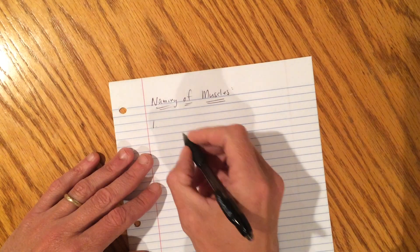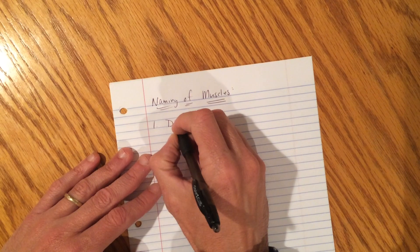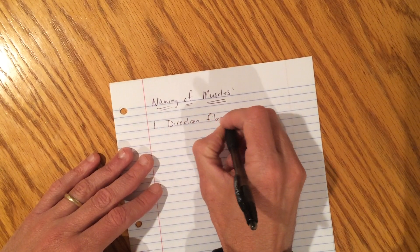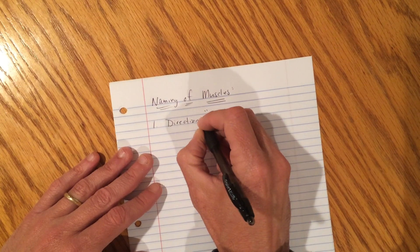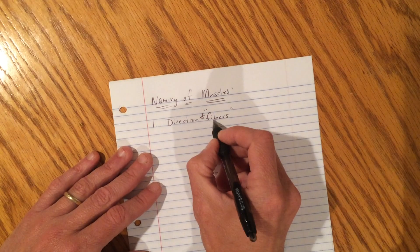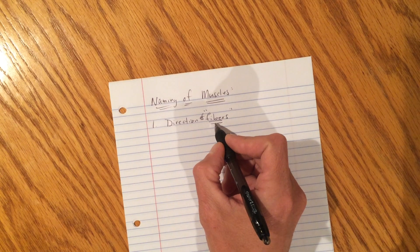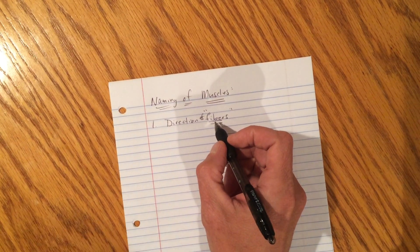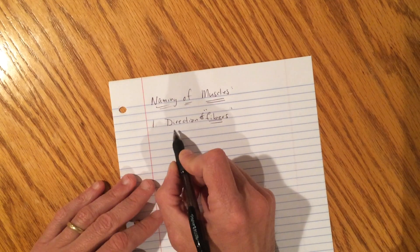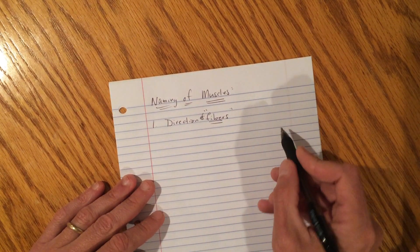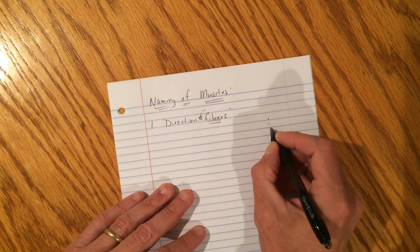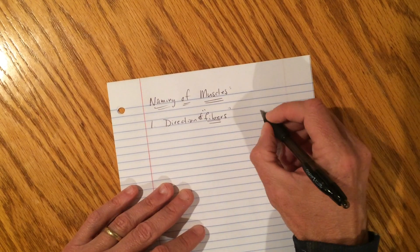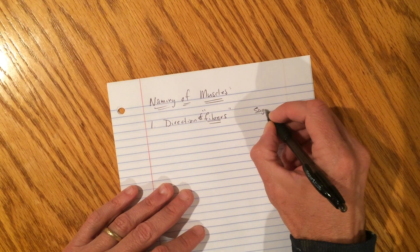Number one, the first way in which muscles are named is the direction of fibers. If you don't remember that word, go back and look up muscle fiber in that general anatomy review. It might have been the first or second lesson in this unit. So some muscles are named for the direction of their fibers.